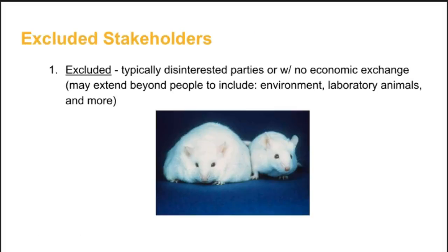The third class of stakeholders are excluded stakeholders. These are disinterested individuals or groups that have no economic interaction with the business. Though this classification can also extend beyond people to include environmental and humanitarian stakeholders such as plants, soil, rainforests, and animals in the laboratory or wild.